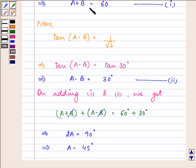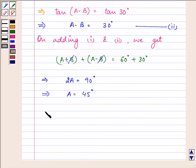And if A+B = 60° and A = 45°, then that implies the value of B = 15°.